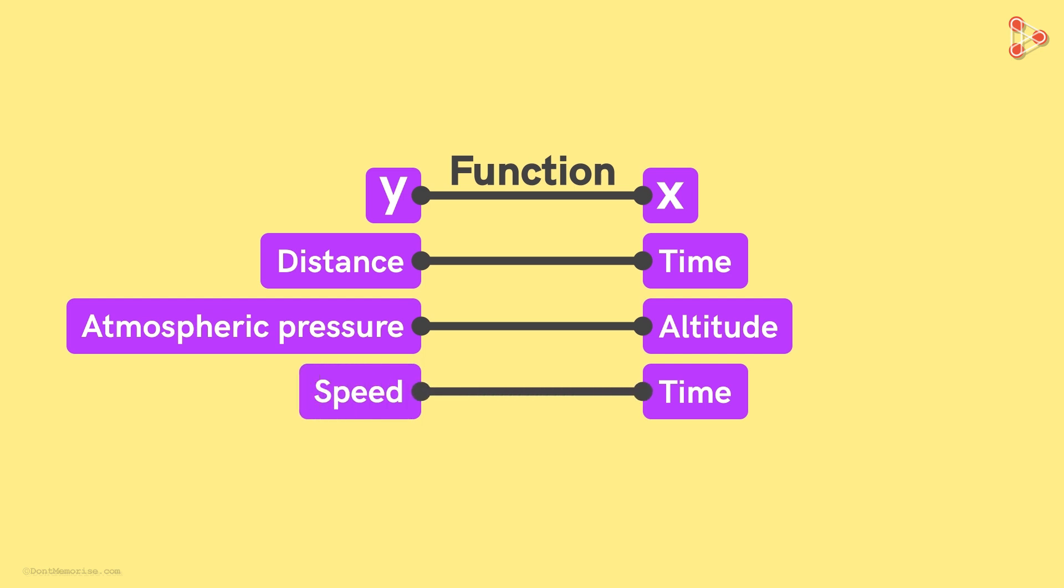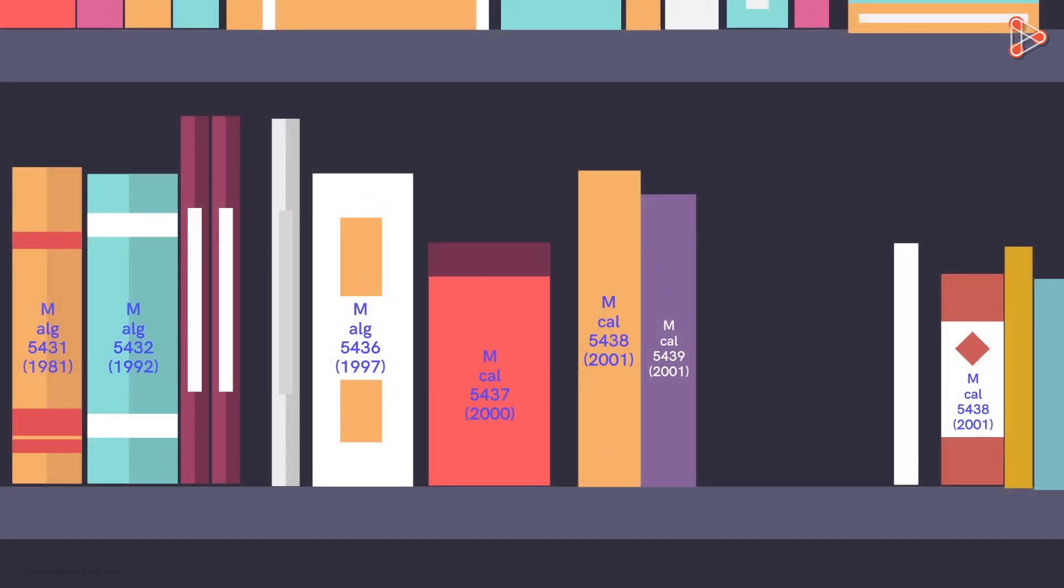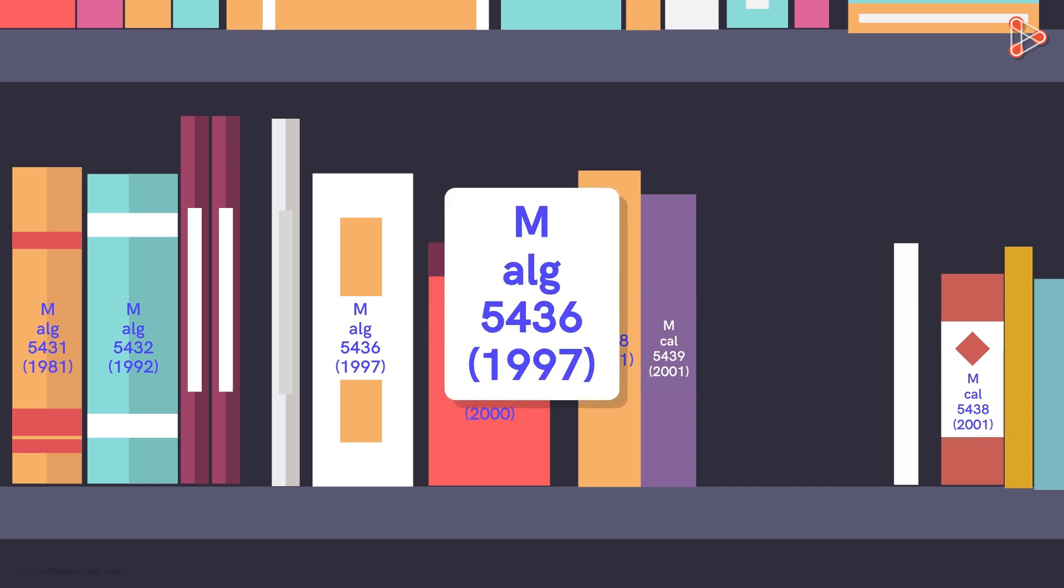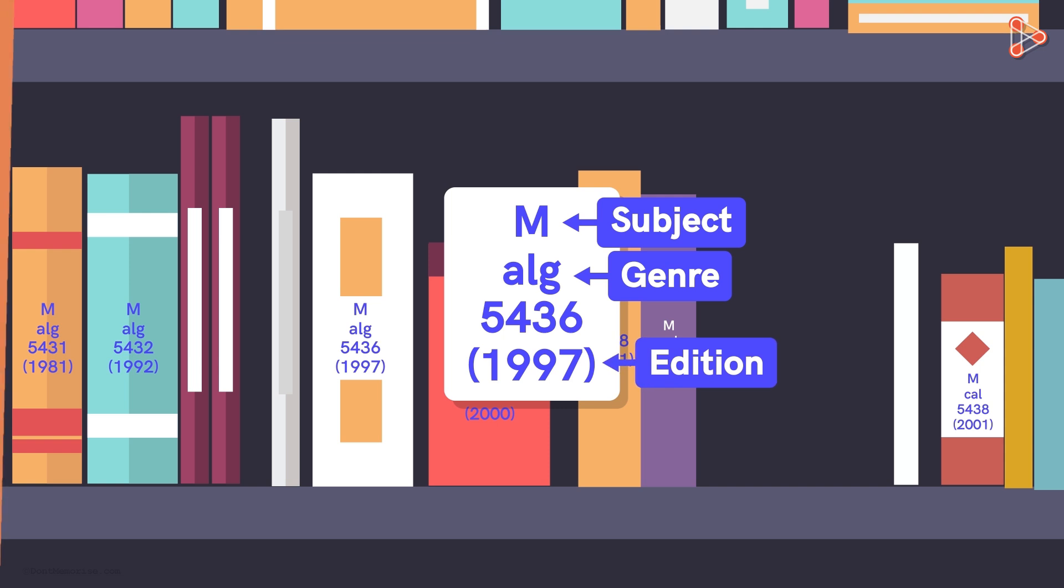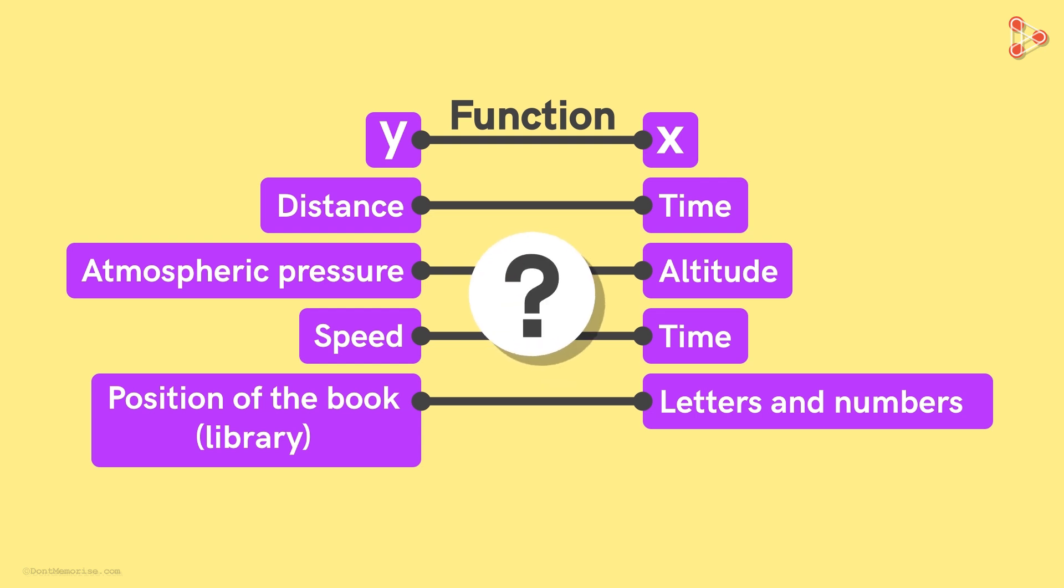Can you think of other functions like these? Let me give you one example. What do you think the position of a book in a library is dependent on? Each book in a library is labelled using letters and numbers like these. And these letters and numbers could be based on the subject, or the genre or edition maybe. So the position of the book is dependent on some letters and numbers. Any more examples that you can think of? Share your thoughts in the comment section below.